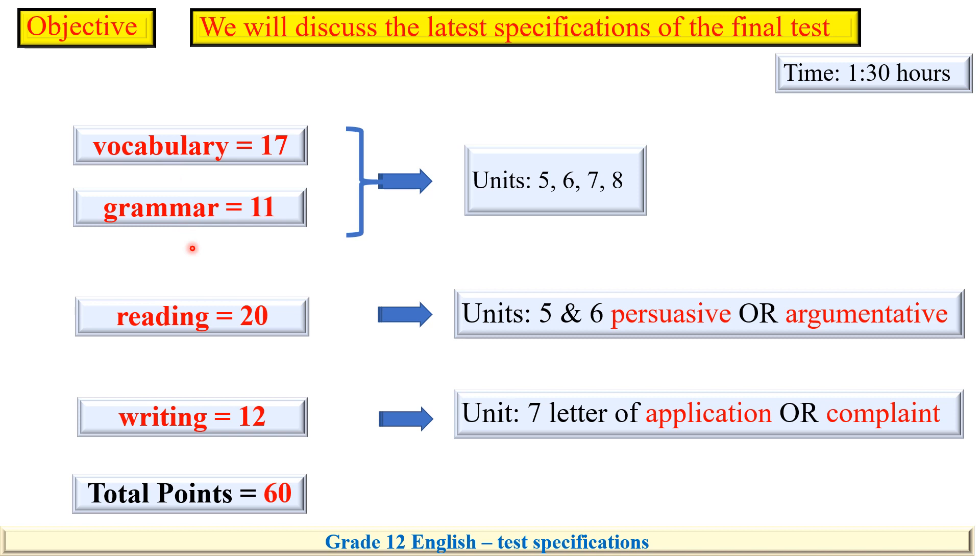Vocabulary and grammar are under the title of use of language from all units. Reading is either persuasive or argumentative, as in units 5 and 6, and the writing is just one letter, an application or a complaint letter, as it is found in unit 7.